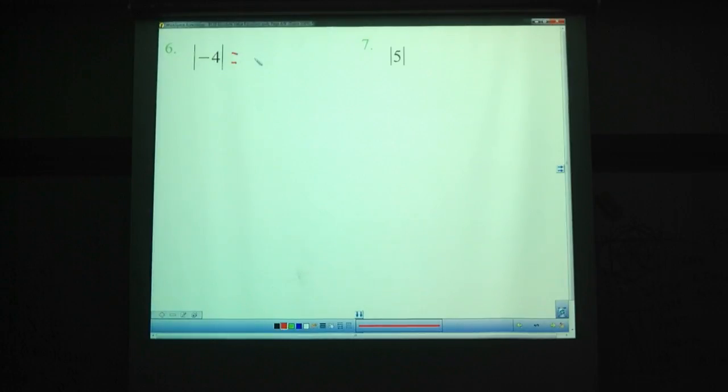Find out what these two absolute values equal, absolute value of four and absolute value of five. Pause the video. And we're back. What did you get for absolute value of four? Hopefully you're saying four. What did you get for absolute value of five? Hopefully you're saying five. Question. What other number has an absolute value of four? Hopefully you said negative four. And what number also has an absolute value of five? Hopefully you said negative five.